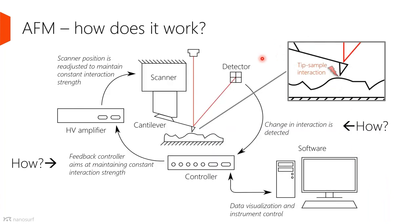To understand that better, I want to go back to looking at how an AFM works — the feedback cycle. We have a cantilever interacting with the surface and a photodetector detecting that change in interaction. The signal comes into the controller, which tries to maintain some constant interaction and sends out a control signal based on that.